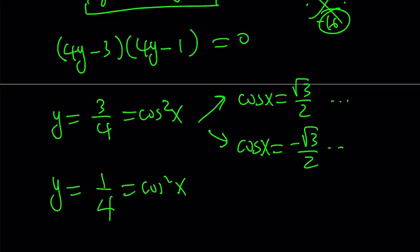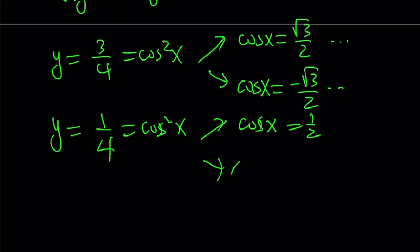So it's going to be a minus sign. And we get y equals one fourth. And that is equal to cosine squared. And from here, we get cosine x equals one half and cosine x equals negative one half. Great. And it's going to give us pretty much the same solutions.